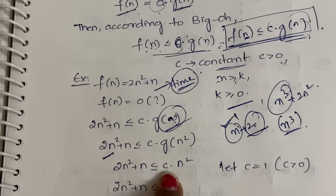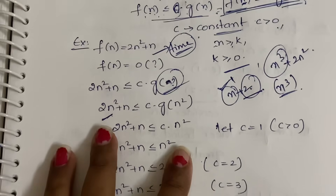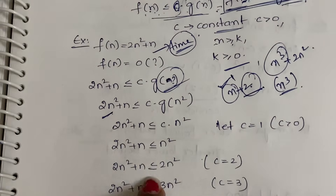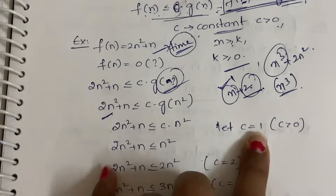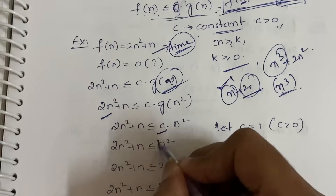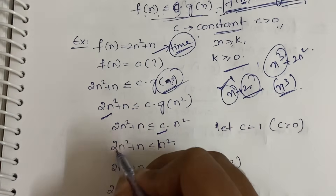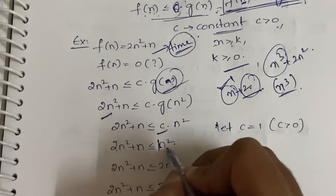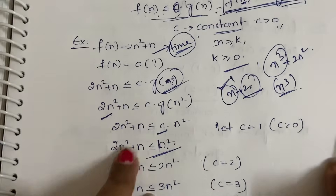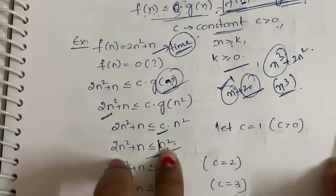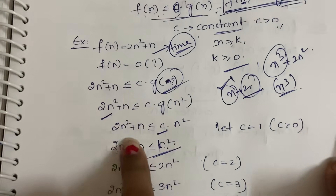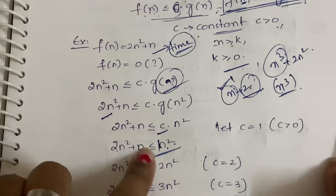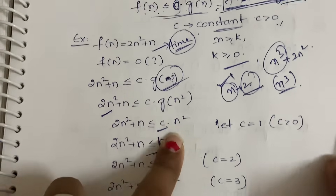So 2n² + n ≤ c · n². For c = 1: 2n² + n ≤ n² — this is false because 2n² itself is greater than n². For example, if n² = 4, then 2n² = 8, and 8 plus something is obviously greater. So c = 1 does not work.